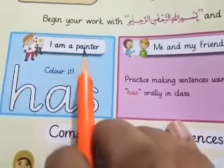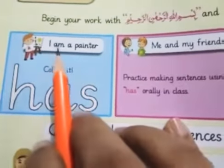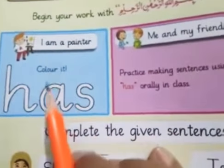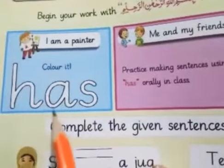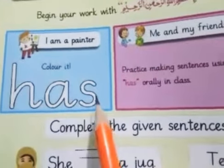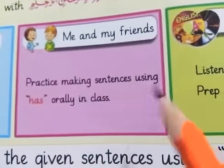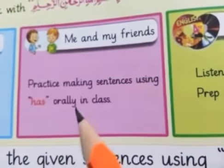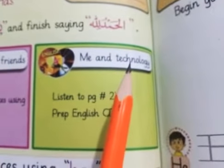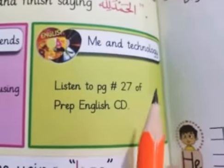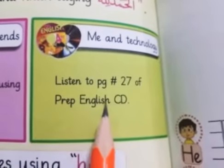I am a painter. Color it. Has — H-A-S. Me and my friends: practice making sentences using has orally in class.